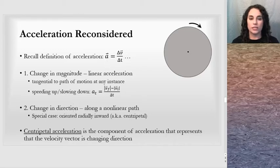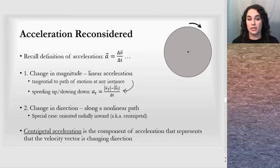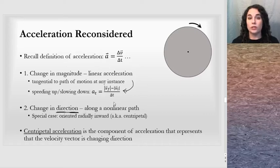When we look at the change in a velocity vector, we can look at the change in the magnitude of the velocity vector, which we call linear acceleration — the change in speed over the change in time. This is tangential to the path of motion at any instance, and represents whether an object is speeding up or slowing down. This is different from a change in direction, which is what we're studying in this lesson — when we look at the change in the velocity vector along a non-linear path, we also get an acceleration.